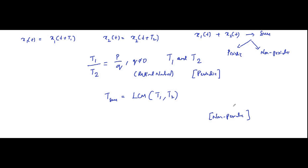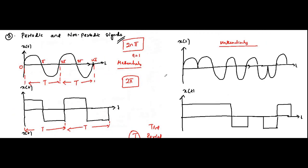These are the important concepts related to periodic and non-periodic signals. The gist is: periodic signals repeat themselves with a fixed pattern after every fixed duration T, which is called the time period. The smallest possible time period is called the fundamental period. Non-periodic signals exhibit no such repetition or fixed pattern after any specific fixed interval — there is no repetition. This is the basic difference between periodic and non-periodic signals.